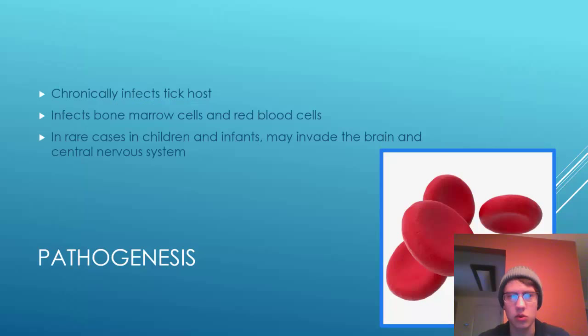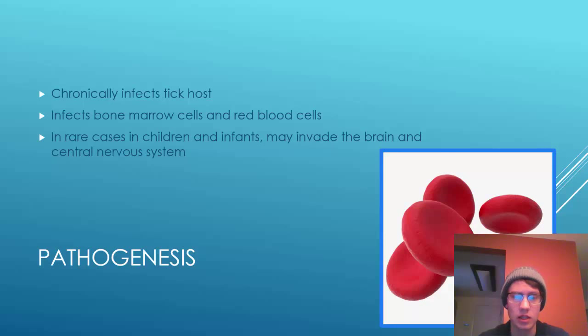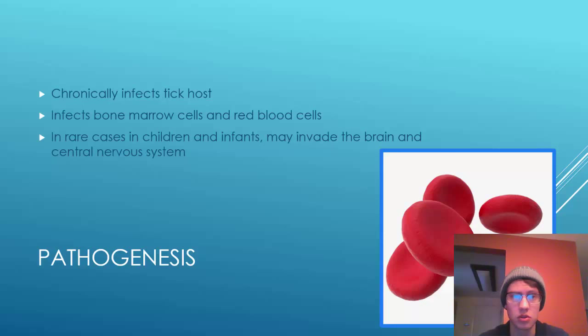The virus will chronically infect the tick host, who will then pass it on to the larger host. If it infects an elk or a deer, it may not actually do anything — there's not a lot of study done into it, but nothing has shown that these large hosts are affected. It's not even clear whether another tick biting them would become infected. But when it infects a human, it will infect the bone marrow cells and the red blood cells, causing a decrease in the number of platelets. In rare cases in children and infants, it may invade the brain and the central nervous system.